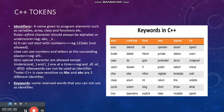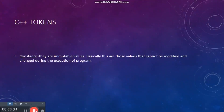The second point is about keywords. As you can see in the box, there are many names listed — these are called keywords. They have special meanings in C++ and different functionalities according to the word given. The third point in tokens is constants. Constants are immutable values which cannot be changed or modified during the execution of a program. What this actually means, we will learn when we do programming.